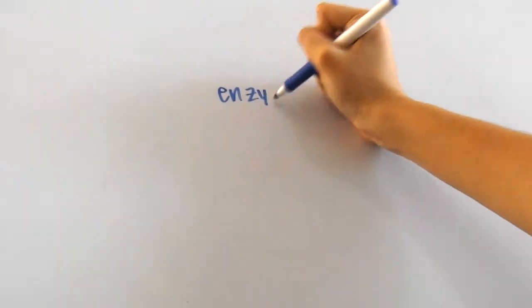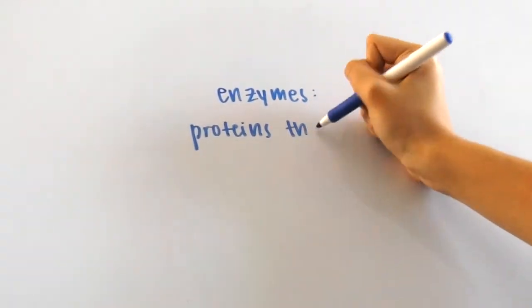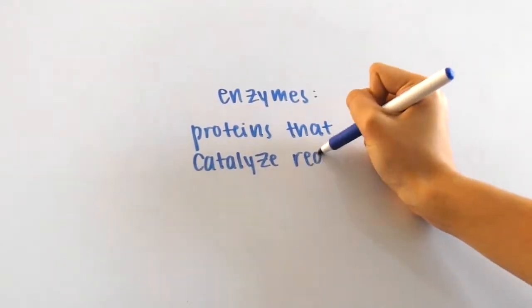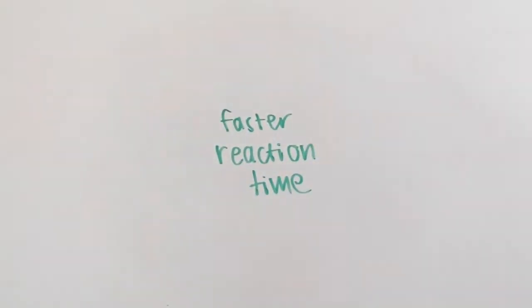In addition, we'll be going over what enzymes are in this video. Enzymes are actually proteins that catalyze reactions, meaning that chemical reactions can get started faster. They don't actually make the reaction time faster, they just make them happen sooner than they would.